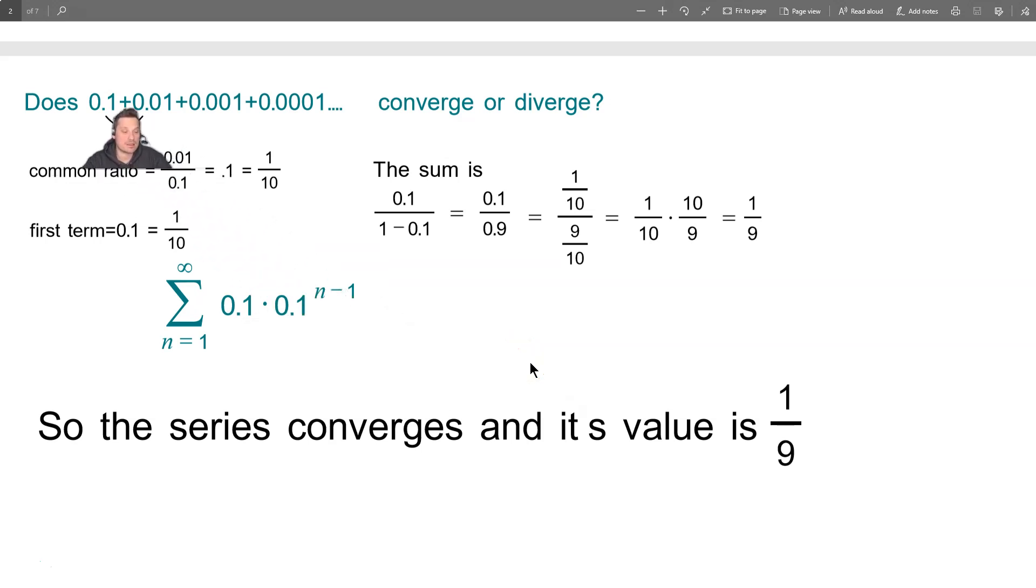Hello, in this one I'm going to show you how to answer this question. Does this series given here converge? So I have 0.1 plus 0.01 plus 0.001 plus 0.0001 and so on. That's what the ellipses mean, the dots. Let's continue addition. So does it converge or diverge? That's the question here.